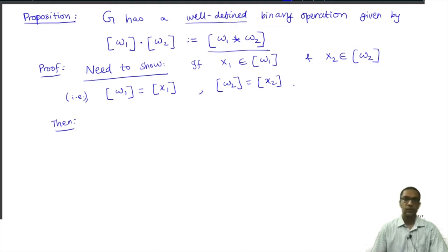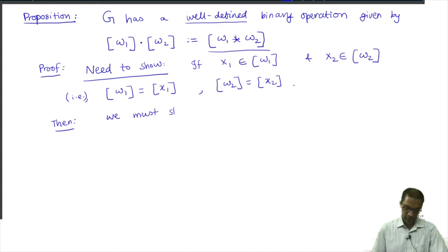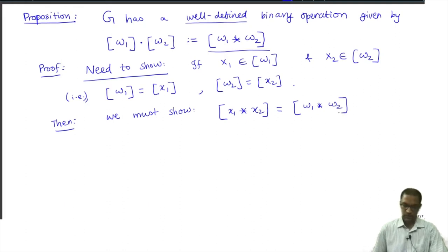Whether I do W1 star W2 and take the concatenation, or I take x1 star x2 and take their concatenation, the answer should be the same. We must show that the equivalence class of x1 star x2 is the same as what you would get if you took W1 star W2. This is what showing well-definedness means. So let us prove this. It comes about from the special way in which the equivalence relation was defined.